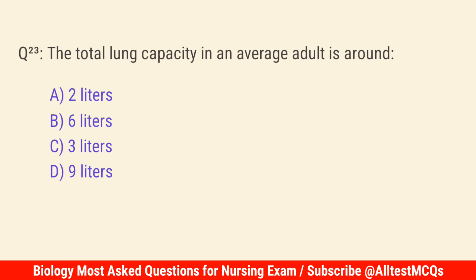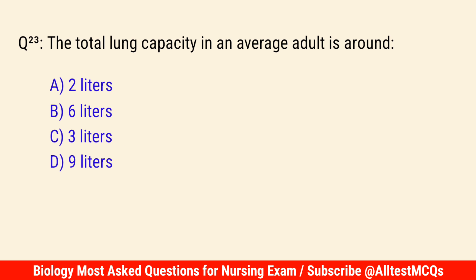Q23. The total lung capacity in an average adult is around? The correct answer is B: 6 liters.